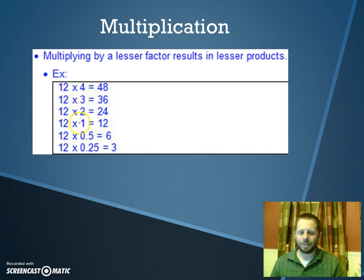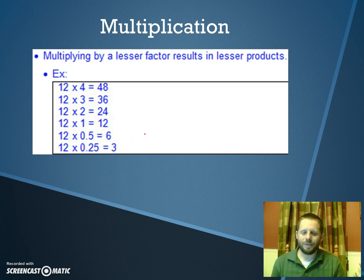Here we are stepping down from multiplying by 1 to multiplying by 1 half. When I multiply by 1 half, we get 6. When I multiply by 1 fourth, we get 3. So this is often a misconception that if you're multiplying, the outcome has to be bigger than the number you started with. That's not necessarily the case based on this pattern.